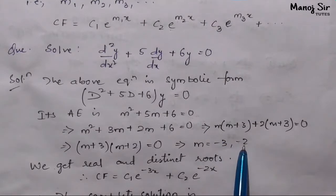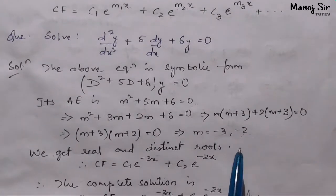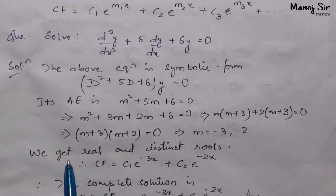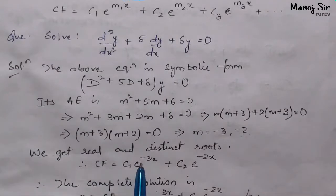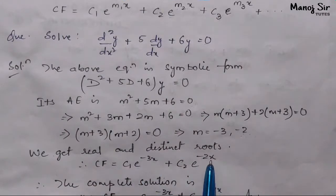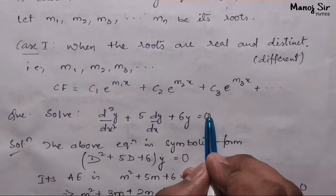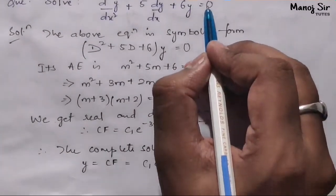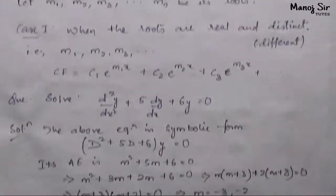From here we can see the roots are real and distinct — both numbers are real as well as distinct, since both roots are different. So we have achieved real and distinct roots. Therefore, CF = c₁·e^(−3x) + c₂·e^(−2x). Since zero is given on the right-hand side, the complete solution is y = CF.